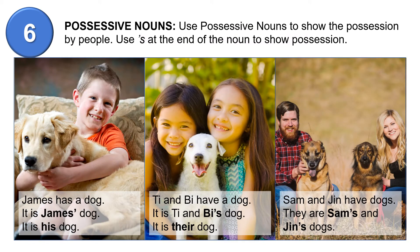James has a dog. It is James' dog. It is his dog. Now, James is ending with an S. In this case, you can just put apostrophe, or you can put apostrophe S. Either one is okay.